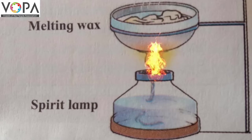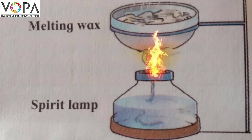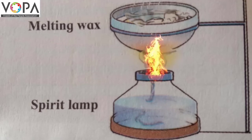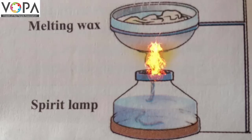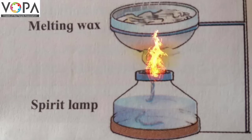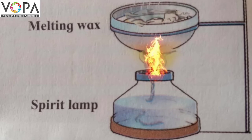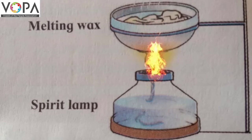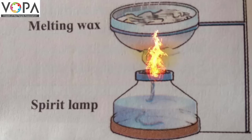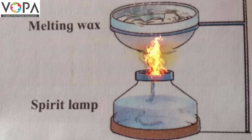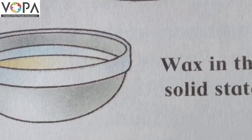Students, what was the initial state of wax? The initial state of wax is solid. But this piece of wax converted into a liquid. Now we will stop giving heat and we will cool it. What happens? Look — it has converted again into a solid.